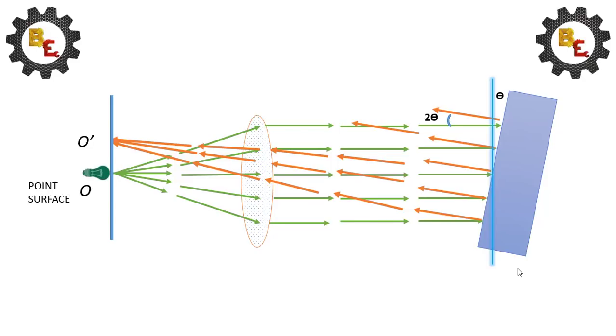The object is tilted at the angle of θ. The reflection will be 2θ with reference to the parallel pencil lines.